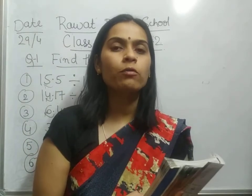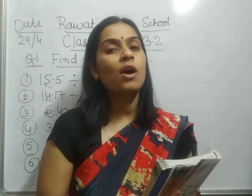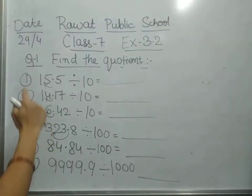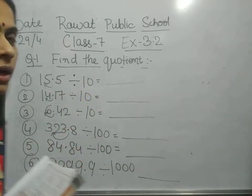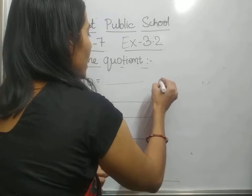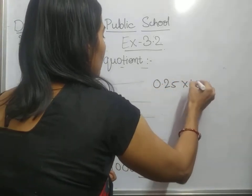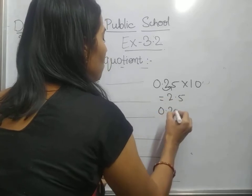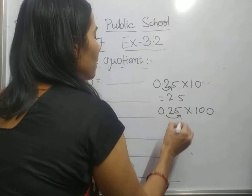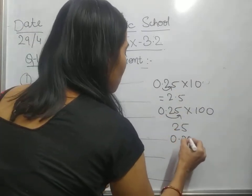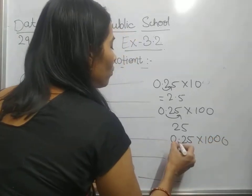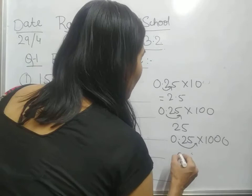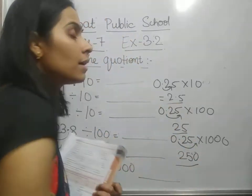We have done exercise 3.1 of chapter 3, that is decimals. Now we are shifting to the next exercise, 3.2. In the last exercise we studied that if any number is multiplied by 10, the decimal will shift to the right by 1 digit — so 2.5 becomes 25. If multiplied by 100, it shifts right by 2 digits. If multiplied by 1000, it shifts 3 positions to the right; if only 2 positions exist, we add a zero. So you get 250.